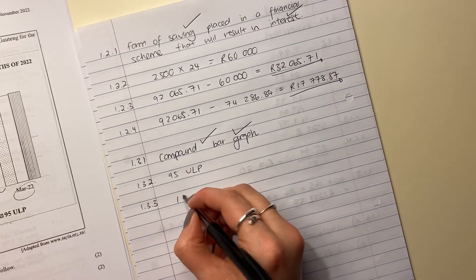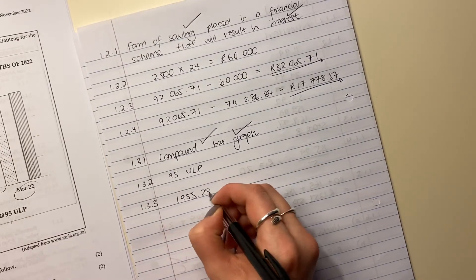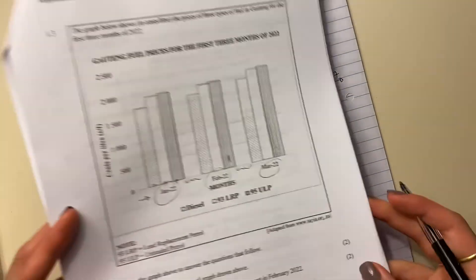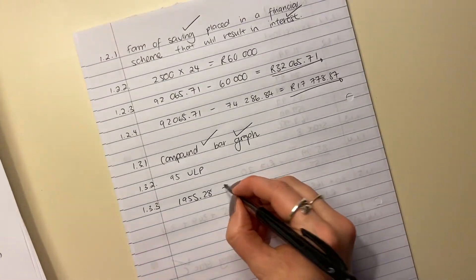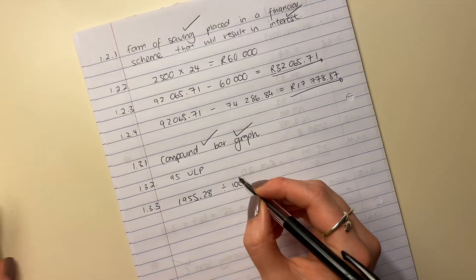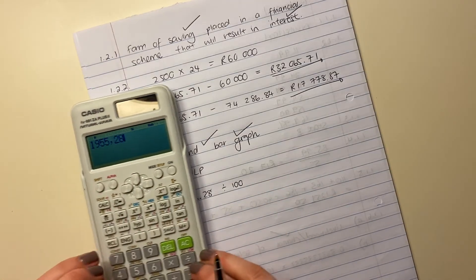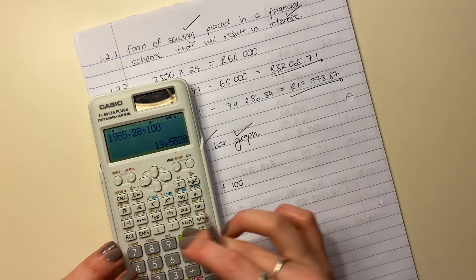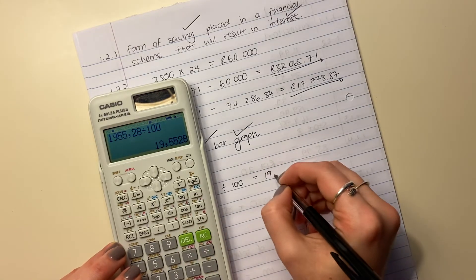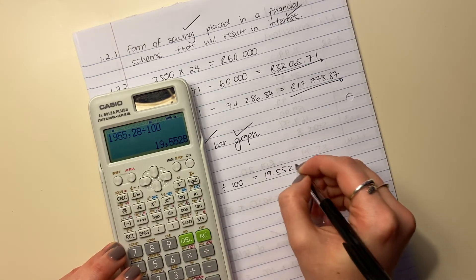So there's convert this 1,955.28. That's in cents. Let's convert it to rand. How many cents are there in a rand? There is 100. So we take this 1,955.28, we divide it by 100 and it gives us 19 rand like this.